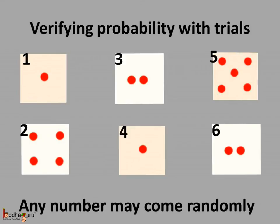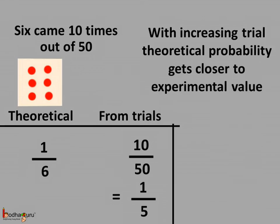So, the theoretical probability may not match with the real chances always. But, if we do more trials, the result gets closer to the theoretical value. Like, if we toss the dice fifty times and six comes ten times, then the probability is equal to 10/50, which is equal to 1/5. And, as we can see, 1/5 is closer to the theoretical probability of 1/6.